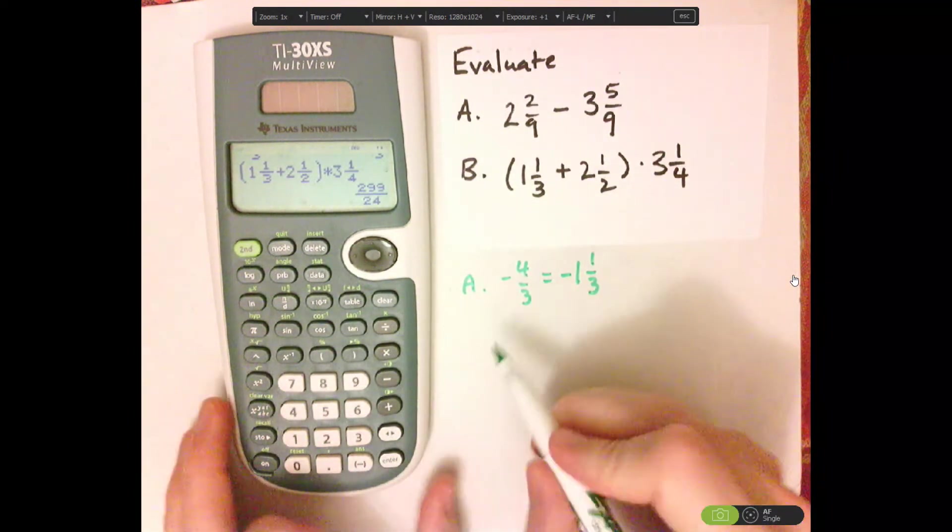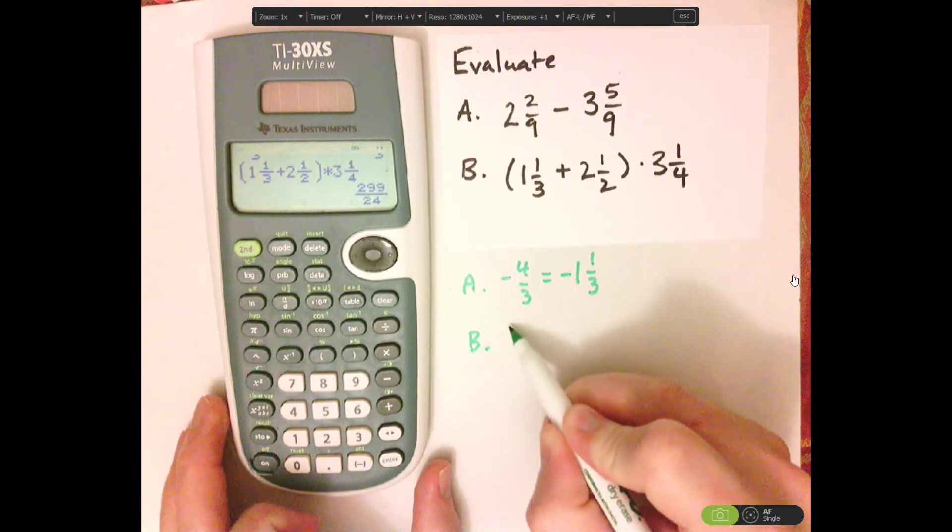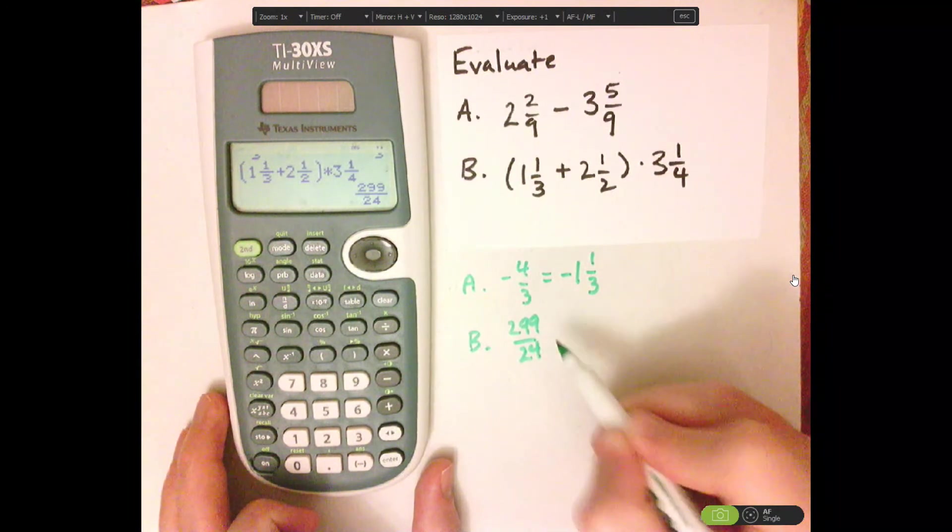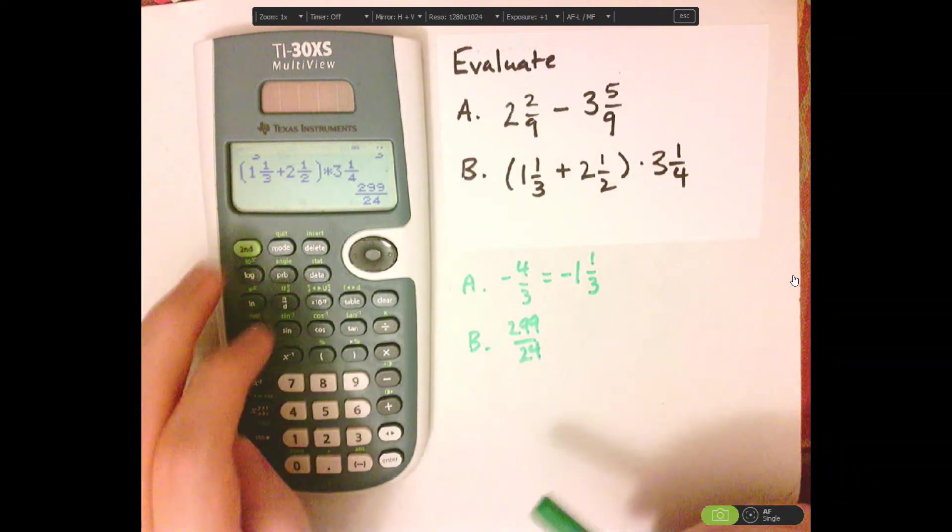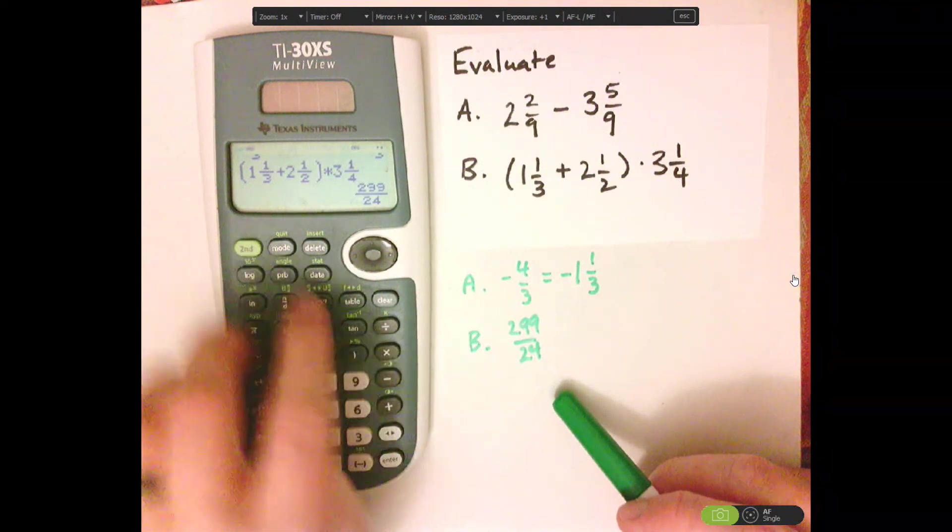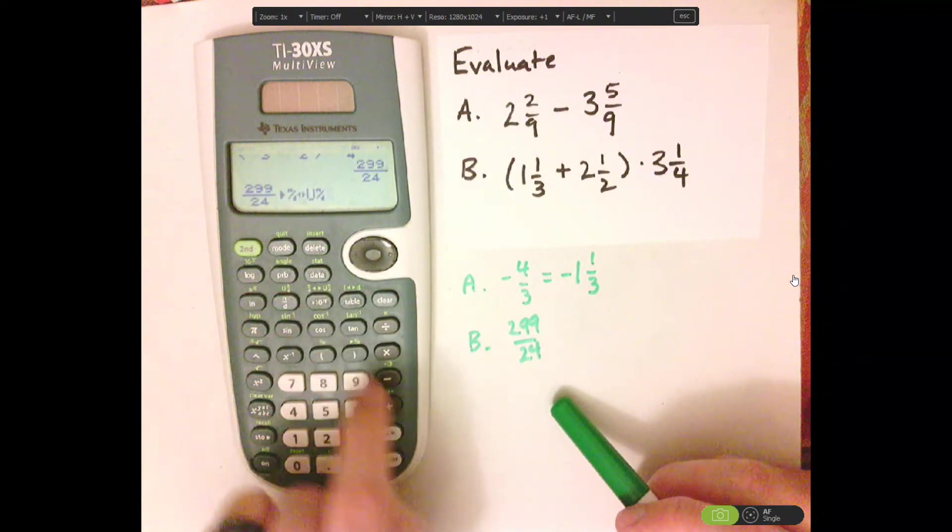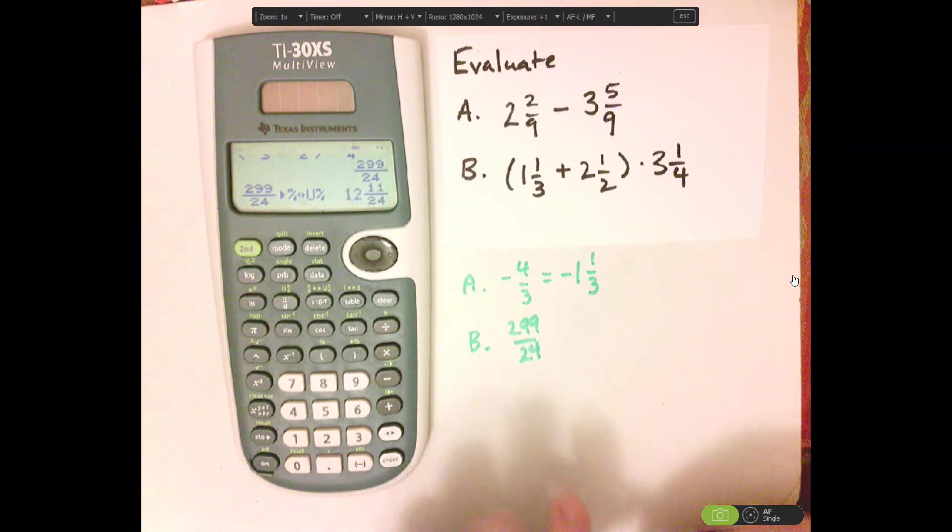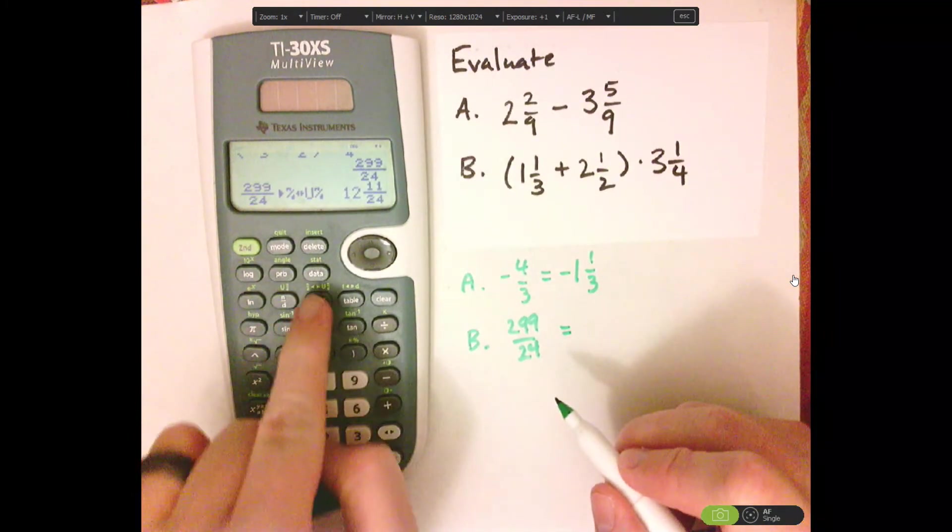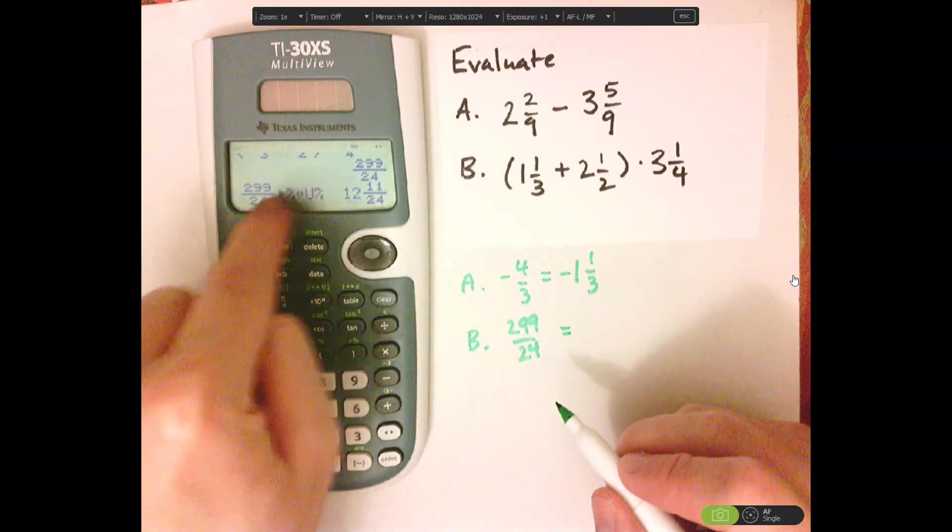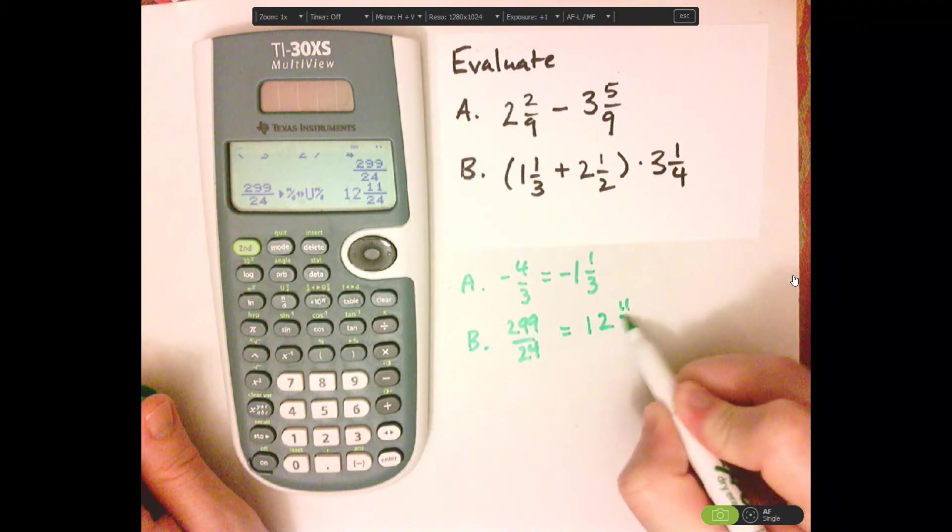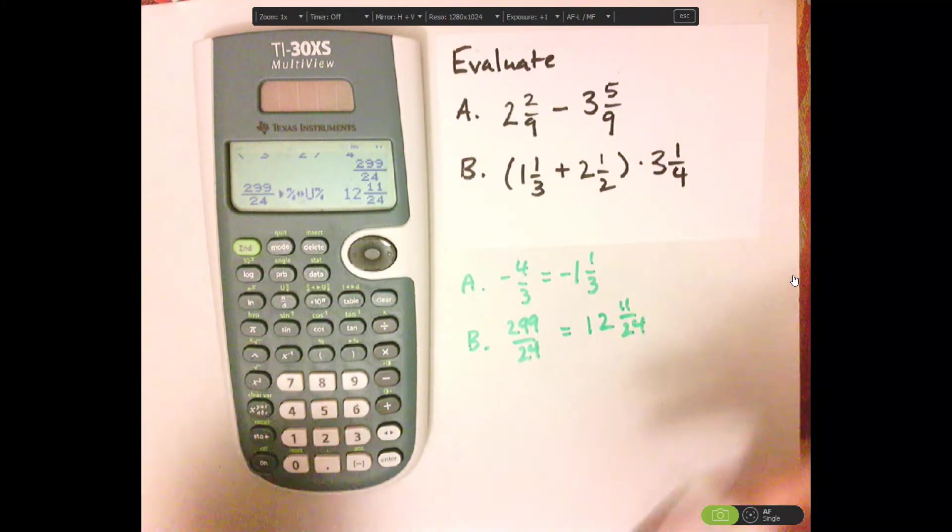Now, I got an improper fraction again, 299 over 24. Let's change that to a mixed number. So second, and then 10N again, and then enter. Notice if you do the conversion, it just grabs the previous line. So that would be 12 and 11 twenty-fourths.